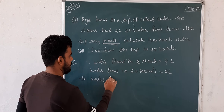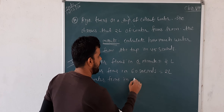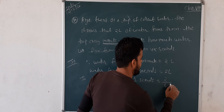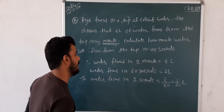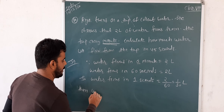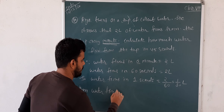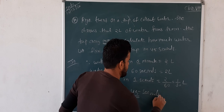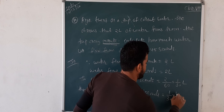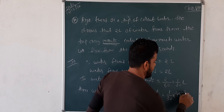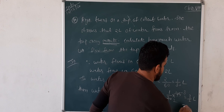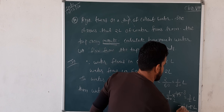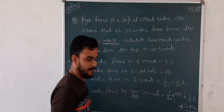Water flows in one minute is 2 litres. Water flows in one second: 2 divided by 60 equals 1 by 30 litres. For 45 seconds: 1 by 30 multiplied by 45. So 15 threes are 45 and 15 twos are 30, giving 3 by 2 litres, which means 1.5 litres. So the answer is 1.5 litres.